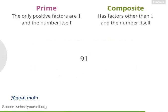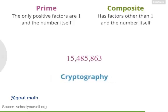But determining whether large numbers are prime or composite can be very challenging. For example, would you guess 91 is prime or composite? It's hard to tell by just looking at it. 91 turns out to be composite — it's 7 times 13. But what about really big numbers, like 15,485,863? You can look it up in a table of prime numbers, and sure enough, it's prime. Because it's so hard to determine whether big numbers are prime or composite, primes are commonly used in cryptography — the science of codes and code breaking — and you can explore this in a later lesson.